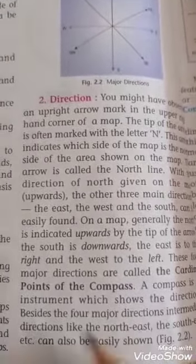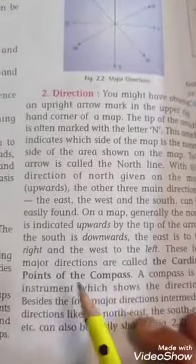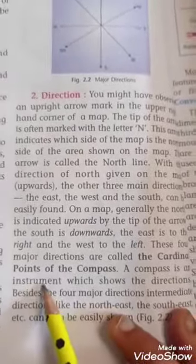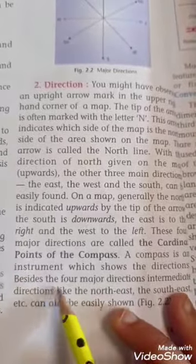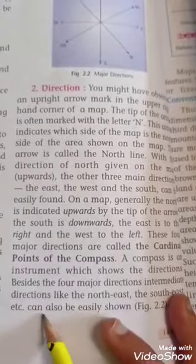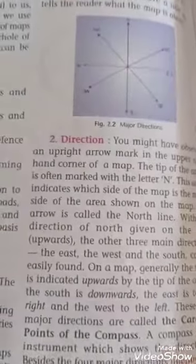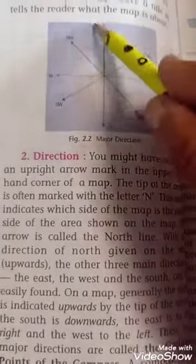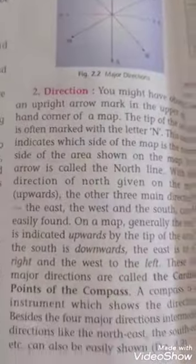These four major directions are called the cardinal points of the compass. A compass is an instrument which shows the direction. Besides the four directions, intermediate directions like the northeast, southeast, northwest and the southwest directions can also be found.